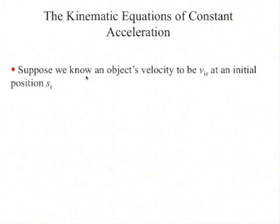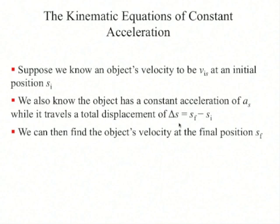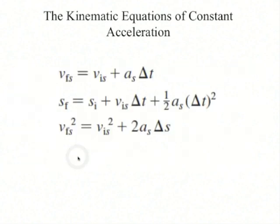Lastly, suppose we know an object's velocity to be v_i at an initial position, and the object has a constant acceleration while traveling a displacement delta s. The derivation is in the book. The square of the final velocity equals the square of the initial velocity plus 2 times a times delta s. That forms the third kinematics equation. So there are three useful equations.